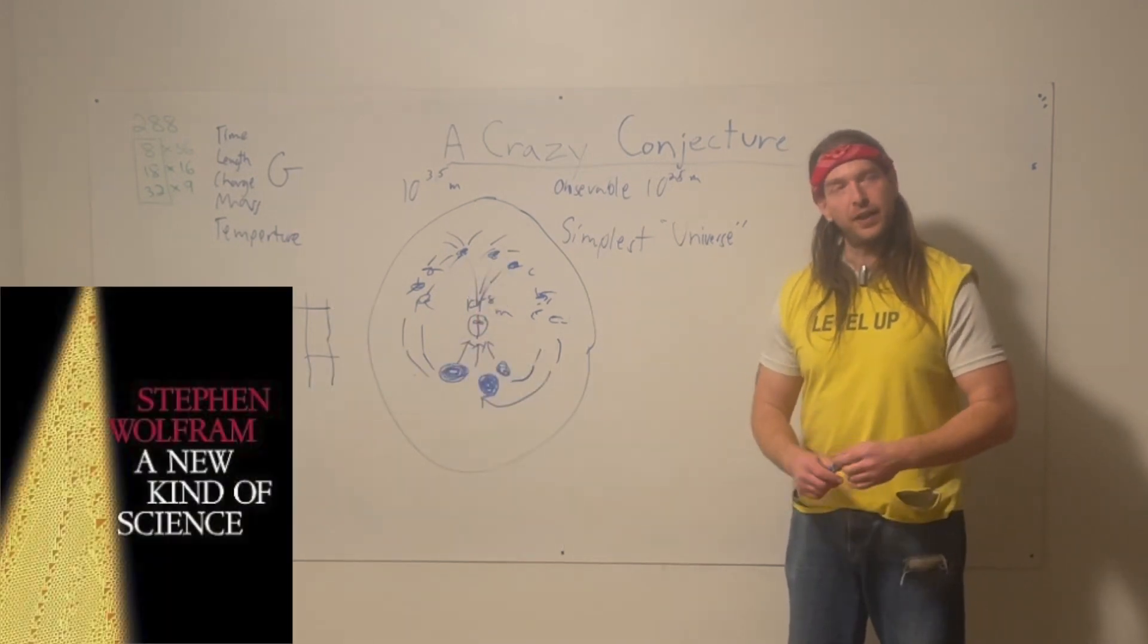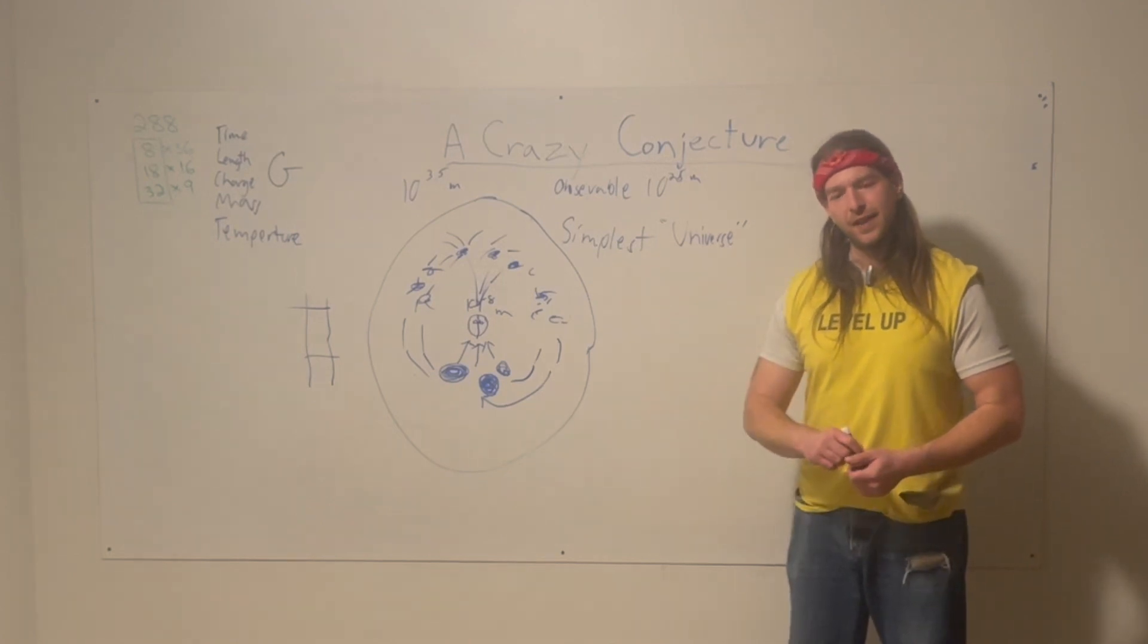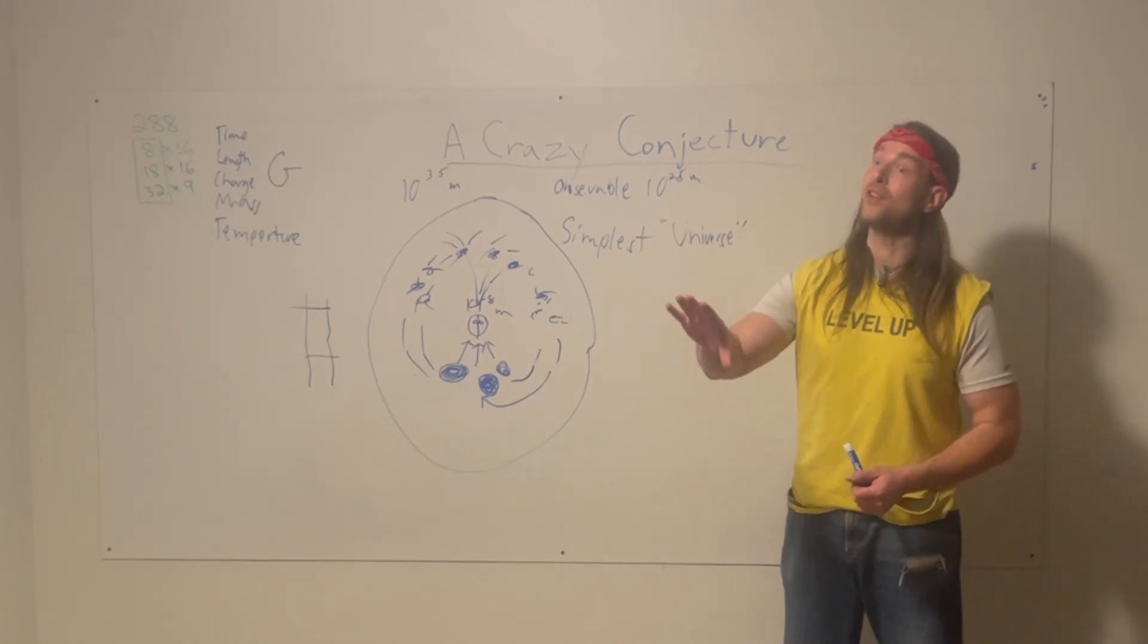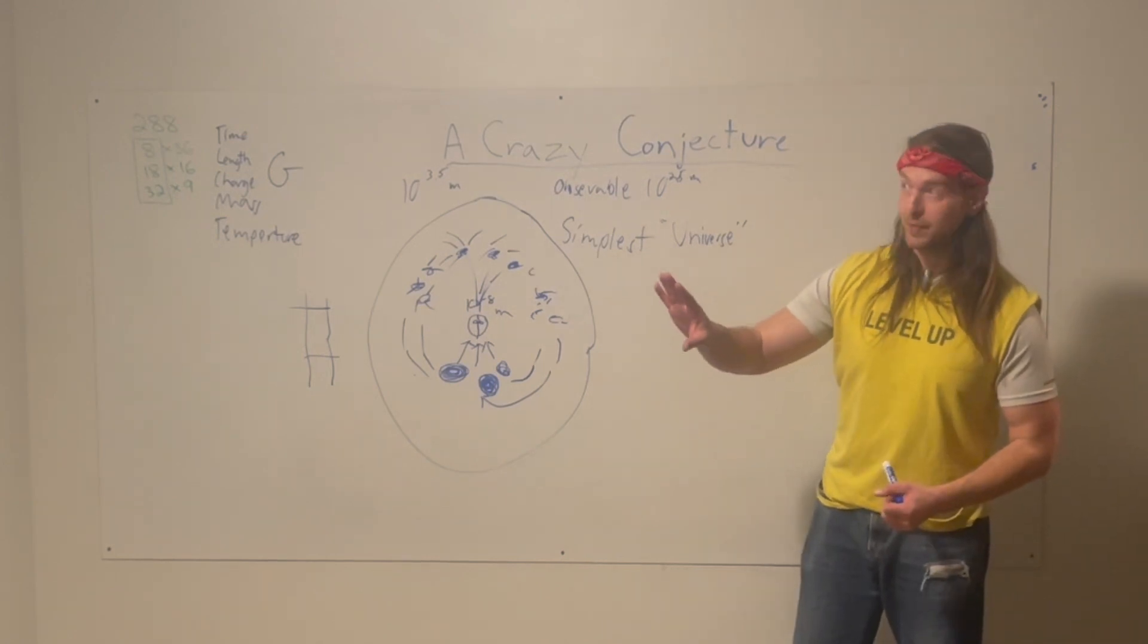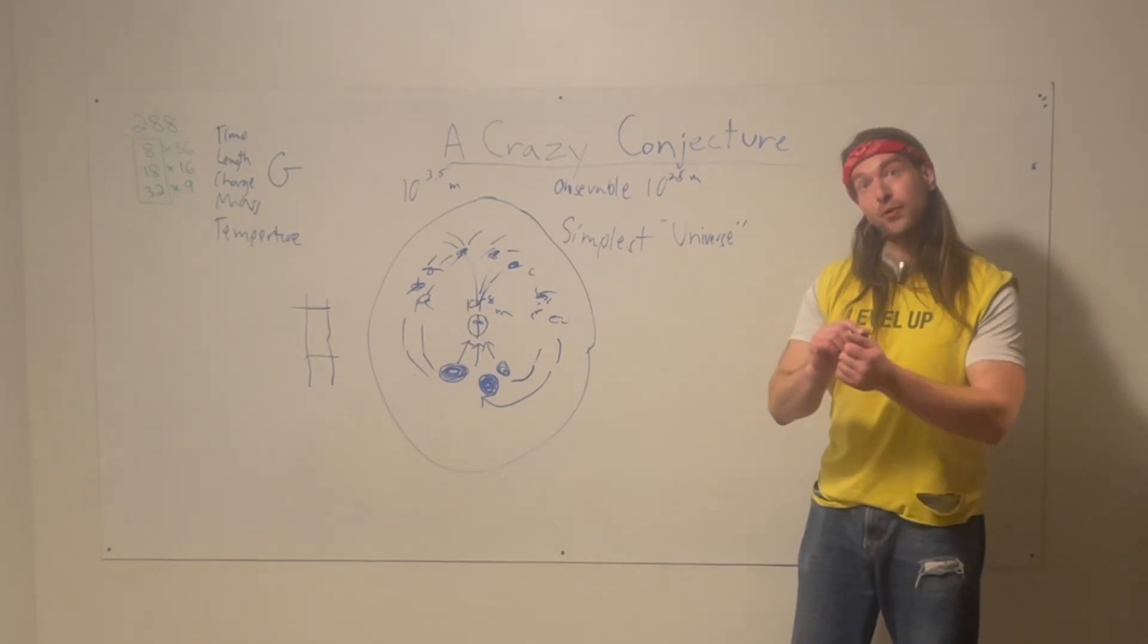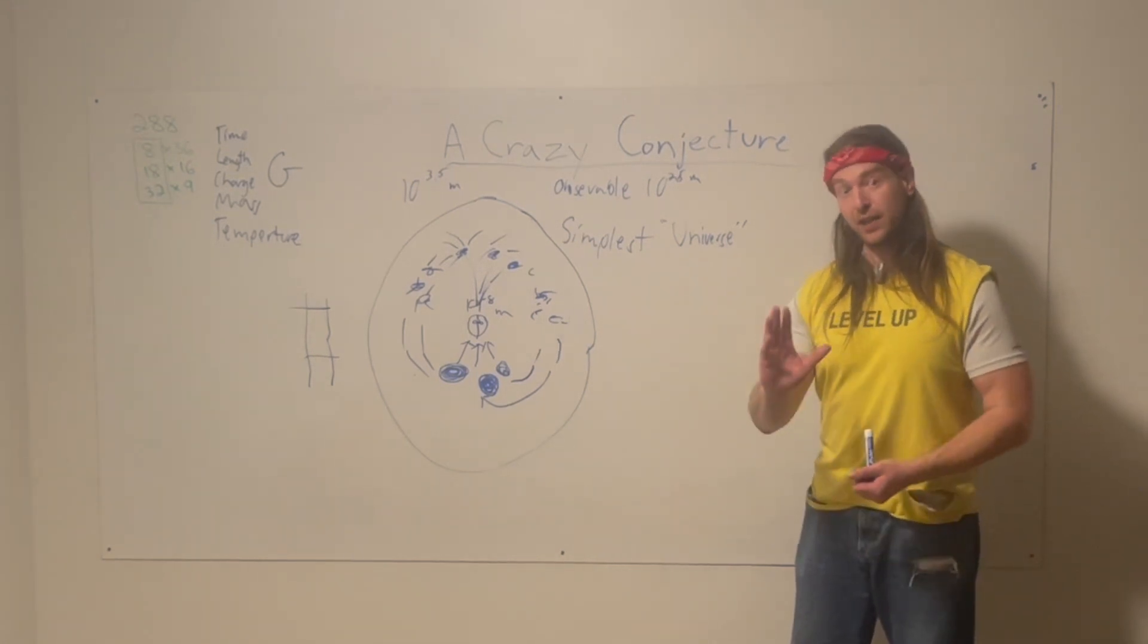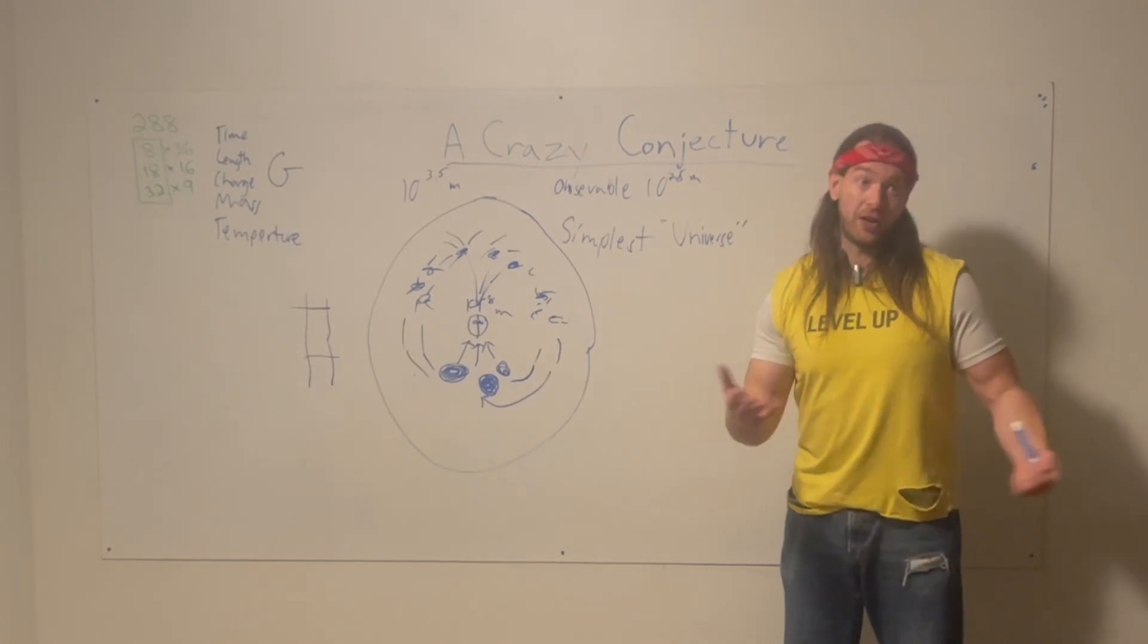he had found, I believe, a two-state, five-color machine. He's found the two-five, and he's found that to be the simplest Turing machine at the time, and then he had found a two-three Turing machine that he had conjectured was the simplest Turing machine. He didn't know how to prove it.